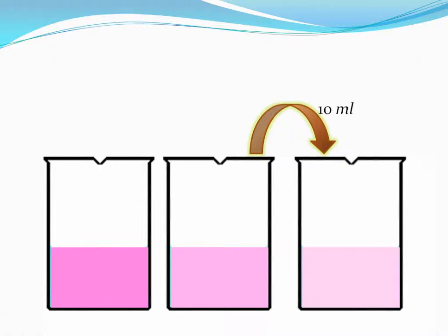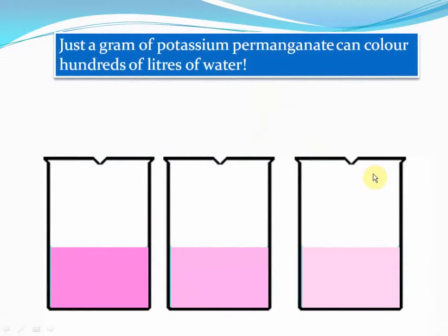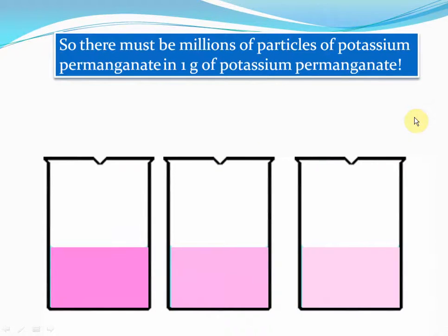What this tells us is that the particles of matter are very, very tiny — they are extremely small in size. After all, 1/10,000th or even less of the initial portion of potassium permanganate still has thousands of particles. Our conclusion: millions of particles of potassium permanganate are present in 1 gram of potassium permanganate. That tells us that the size of matter particles in general is extremely small. All matter particles — whether particles of a table, a chair, water, sugar, salt, or potassium permanganate — all of them are extremely small in size.